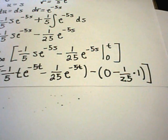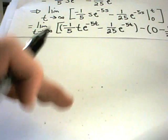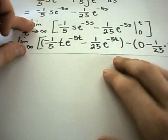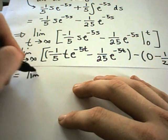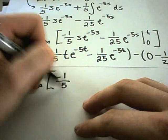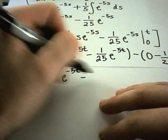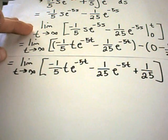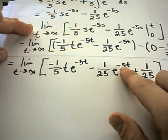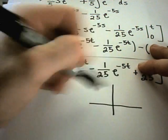The question is: does this integral converge or diverge — do we get a finite number? Simplifying, I have the limit as t→∞ of [−(1/5)·t·e^(−5t) − (1/25)·e^(−5t) + (1/25)]. For the second term, e^(−5t) as t→∞ approaches 0. The third term is a constant 1/25. But the first term has t going to infinity while e^(−5t) goes to 0 — an infinity×0 situation.